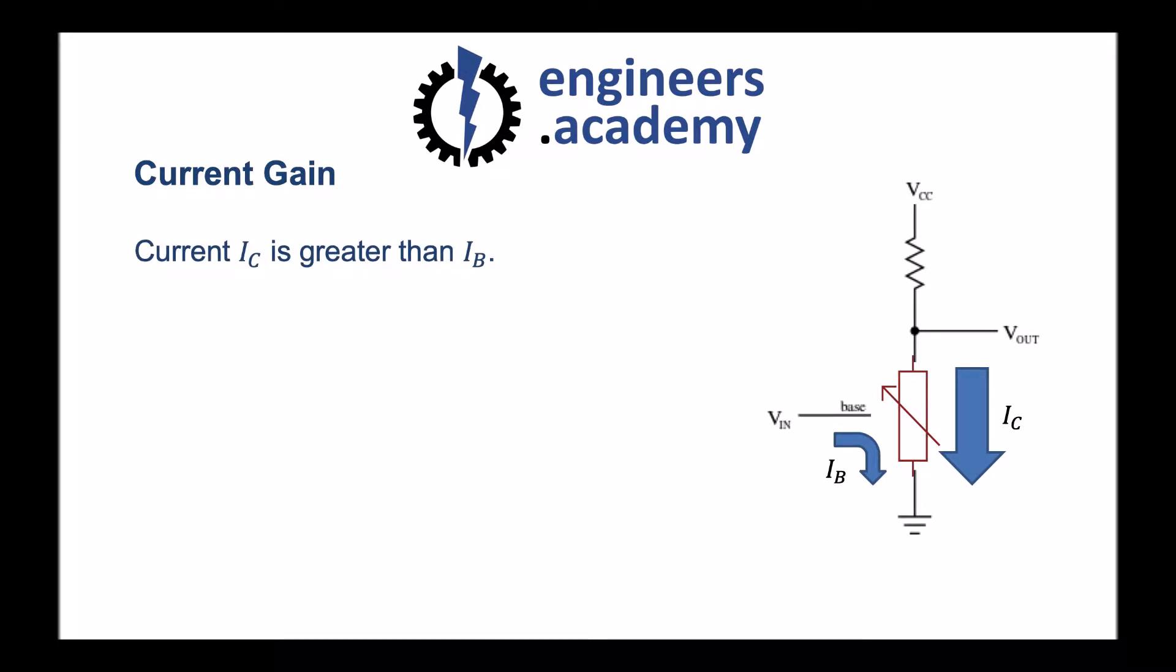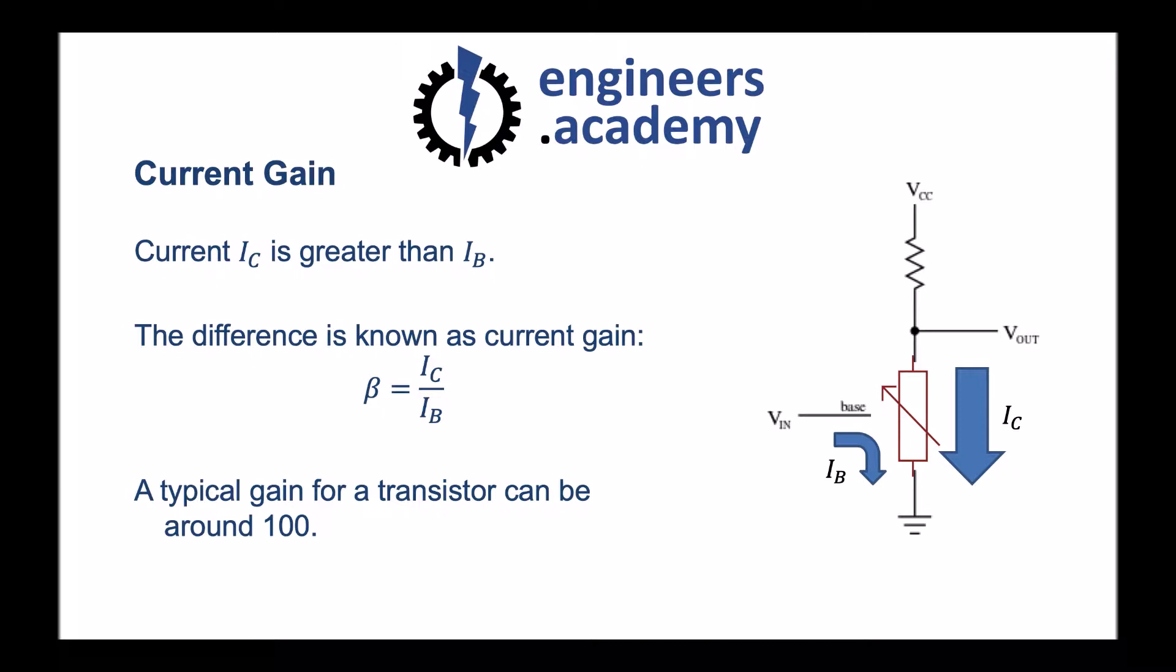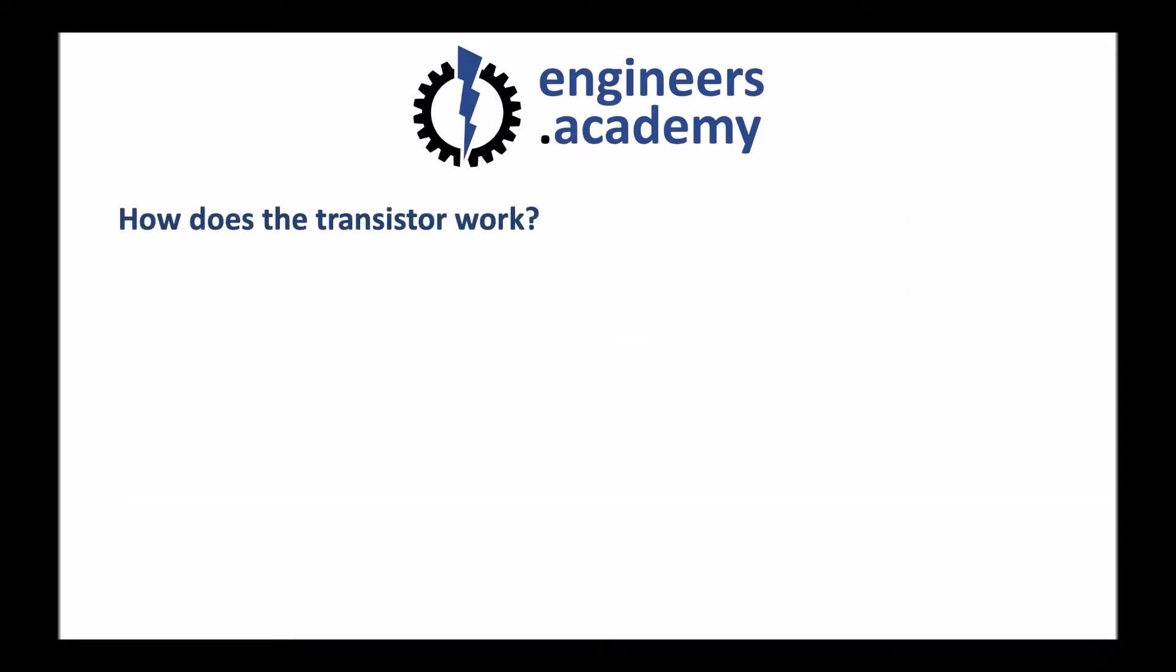We can also measure something called current gain in terms of IC, the collector current, and IB, the base current. We know that IC is greater than IB, and the difference is known as the current gain. We give the gain the symbol beta, and it's equal to the ratio of IC to IB, or IC over IB. A typical gain for a transistor can be around 100, which means if we put 1 milliamp into the base of a transistor, we would expect to see 100 milliamps flowing from collector to emitter.